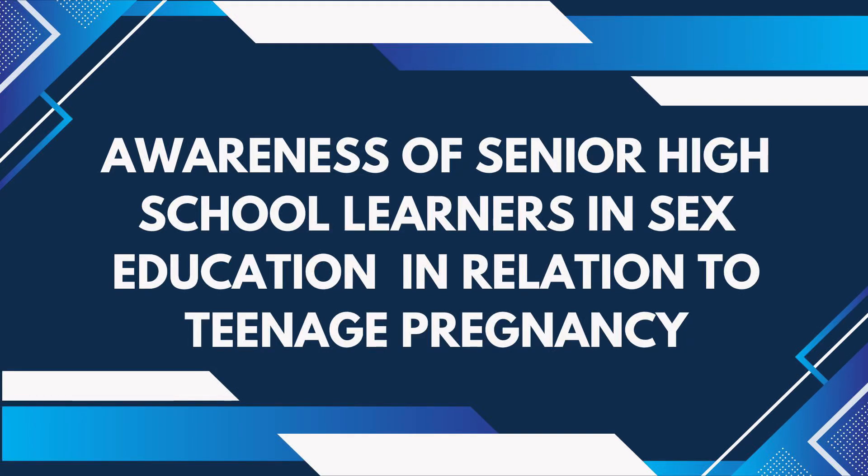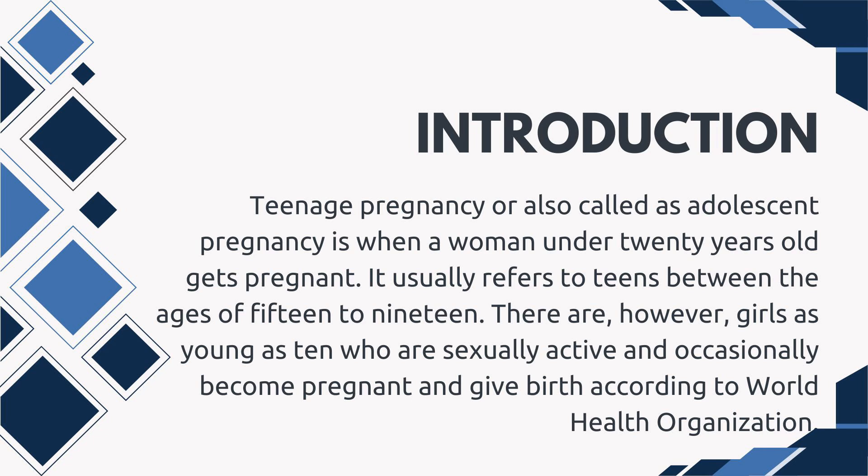This study examines the awareness of senior high school learners in sex education in relation to teenage pregnancy. Teenage pregnancy, also called adolescent pregnancy, is when a woman under 20 years old gets pregnant. It usually refers to teens between the ages of 15 to 19.